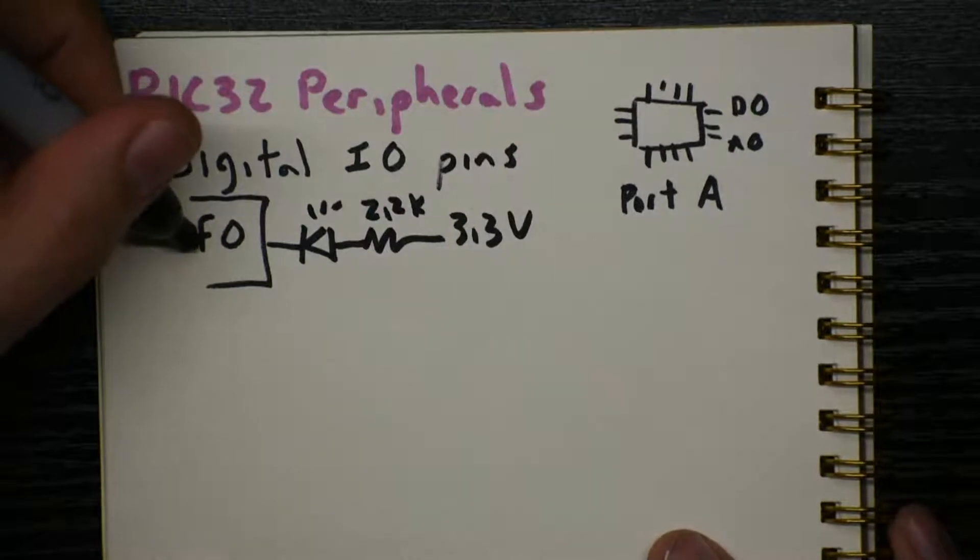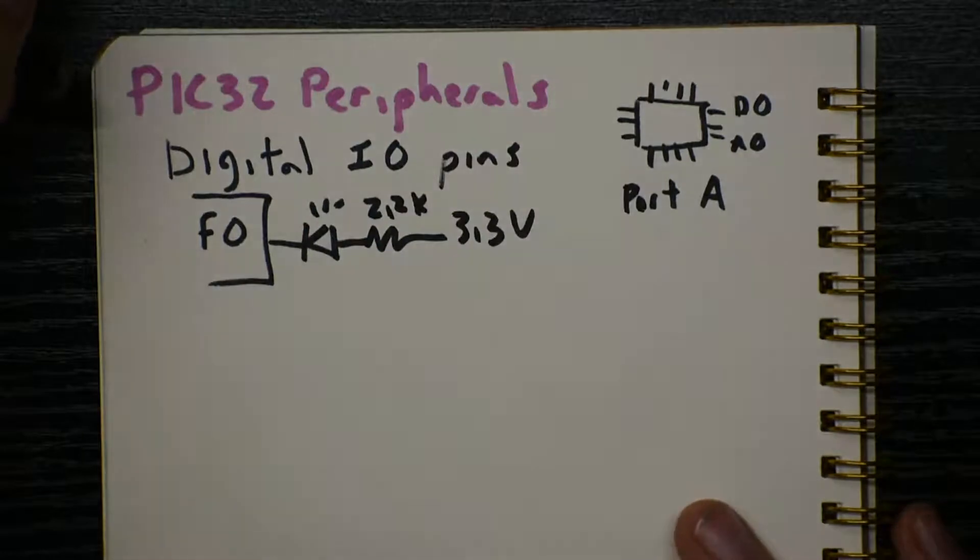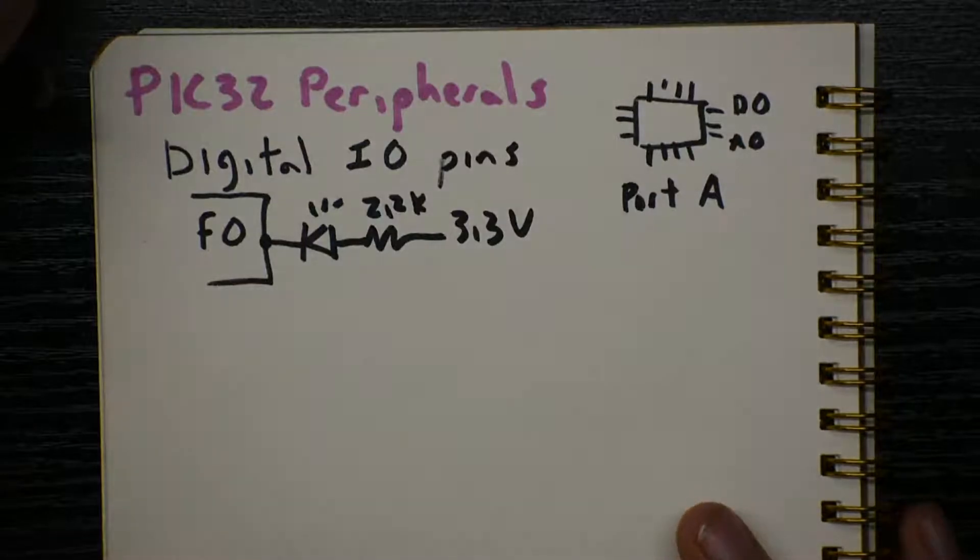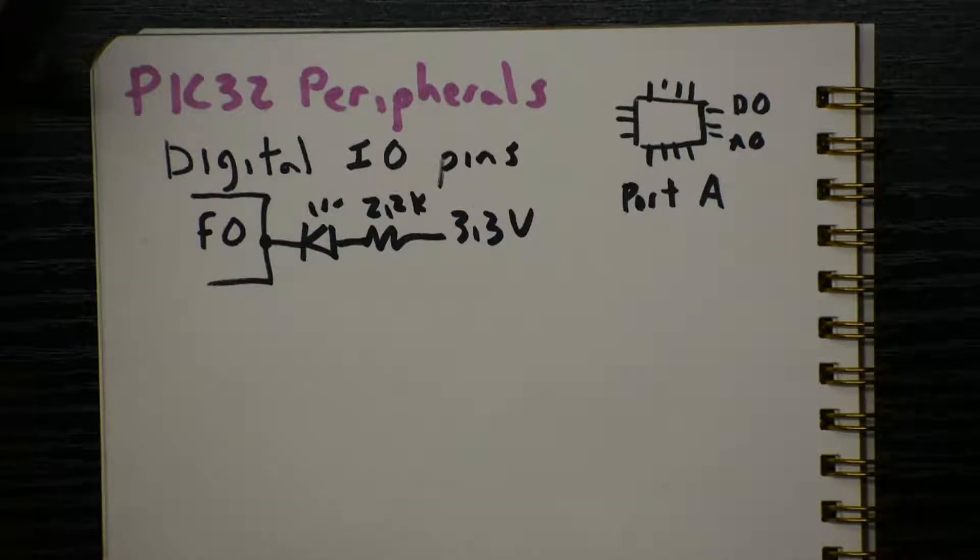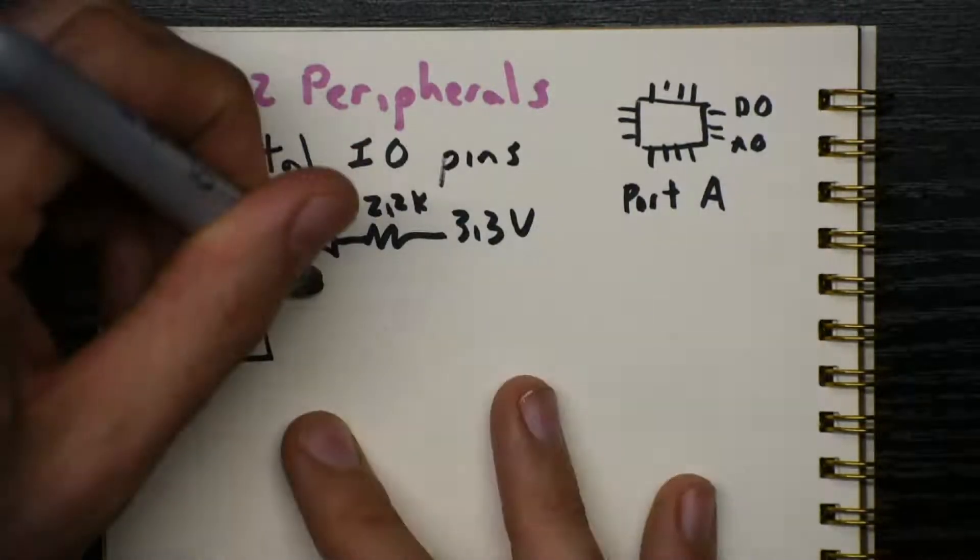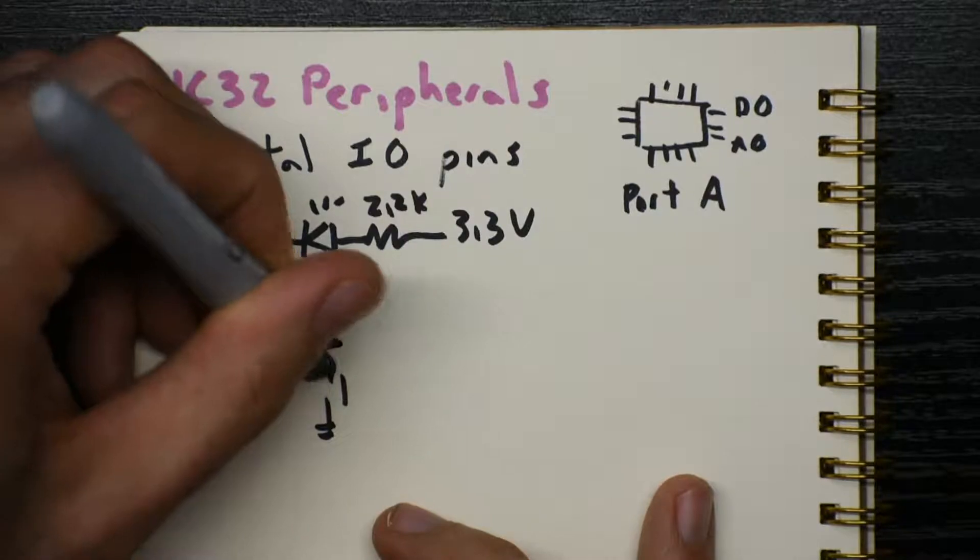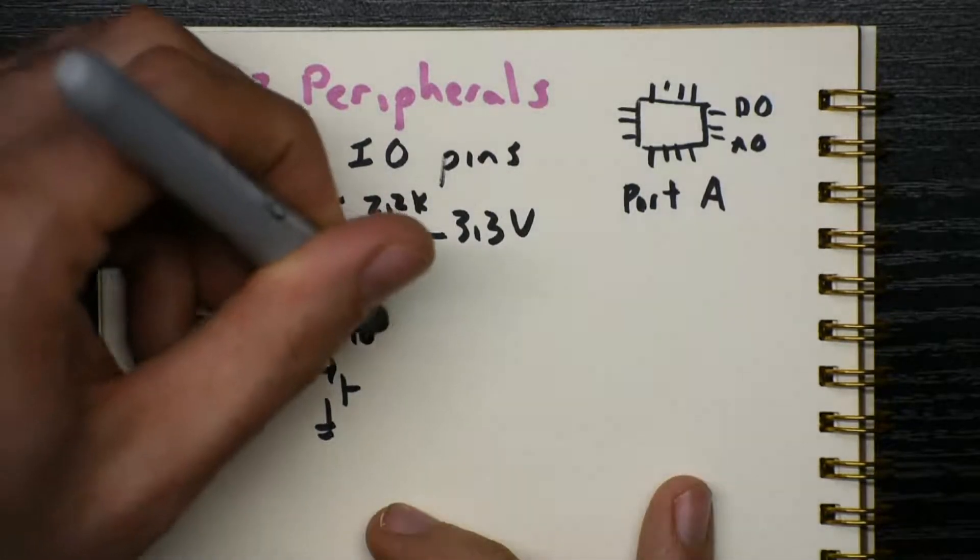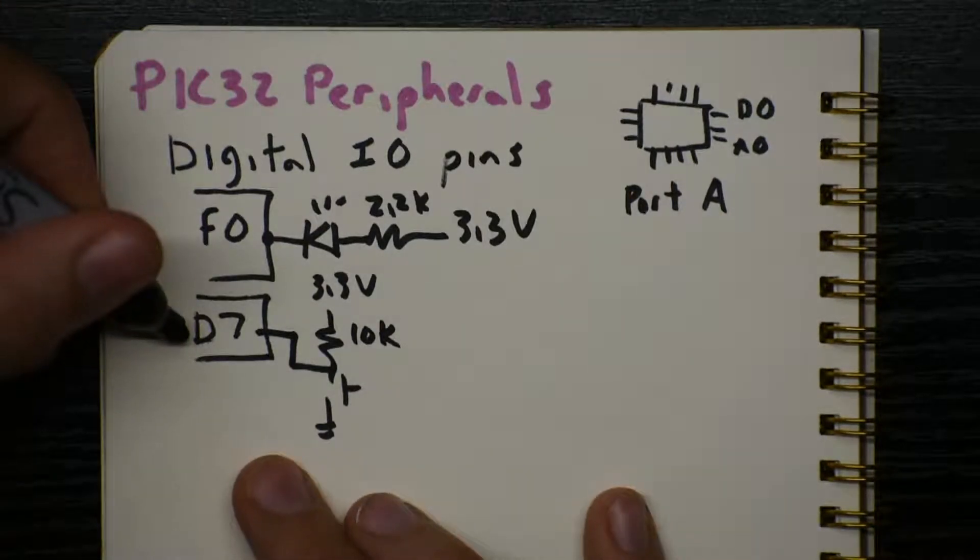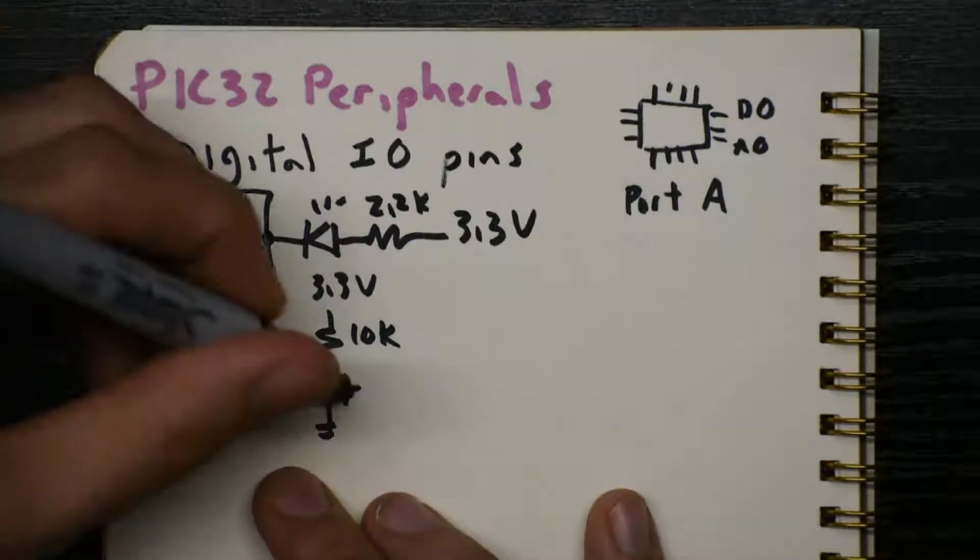So when we make the F0 pin low, current can flow into the PIC and the LED will turn on. And when we make F0 high, then no current will flow because both sides of the LED will be at 3.3 volts and the LED will be off. So that's an example of an output. We've also got pin D7. We're using that as an input pin. We've got 3.3 volts to a resistor to a push button to ground.